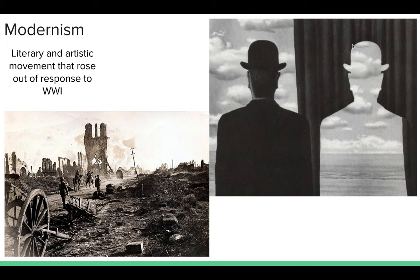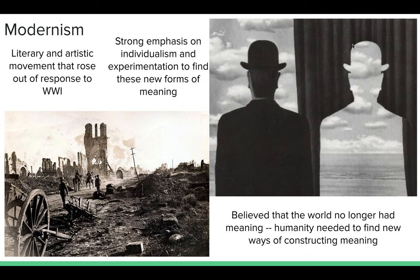Perhaps the decision to do this was due to another major literary movement of which Faulkner was a huge part. Faulkner wrote largely during the time period most associated with modernism — a literary and artistic movement that rose out of response to the devastation and horrors of World War I, and essentially stated that after World War I, the world no longer had meaning, or at least we could not look at meaning in the same way we used to. Authors during this time period, including Faulkner, promoted ideas of individualism and experimentation in the hope of finding and creating new forms of meaning where the old ones had failed.